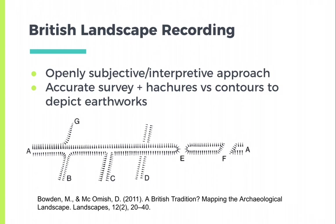Bowden and Macomish describe the British approach as inherently subjective, and contrast this with other objective approaches. For example, some other methods show earthworks as contours, whereas the British survey plan may include contours, but also hashers to depict slopes and to show the relative chronological relationships between different components. So for this example, bank A has no discernible relationship with B — that means you can't tell if B cuts, or lies, or underlies earthwork A, so we assume it is contemporary.